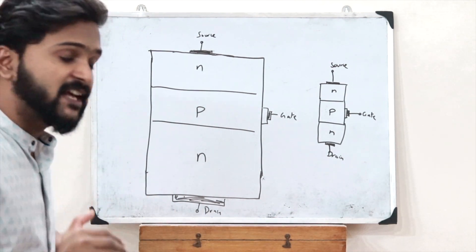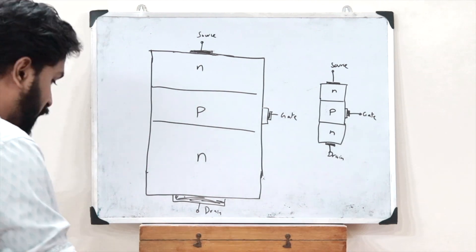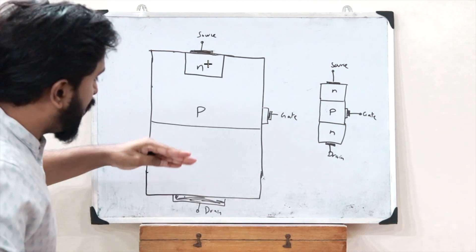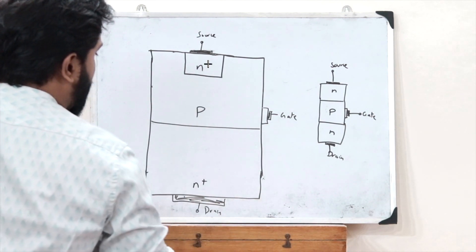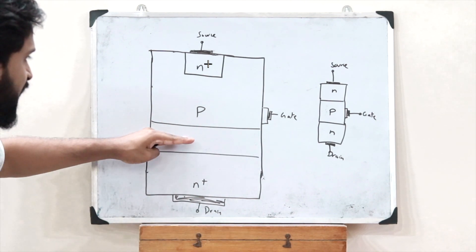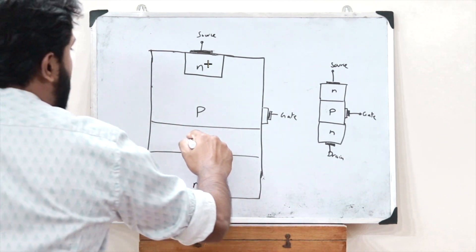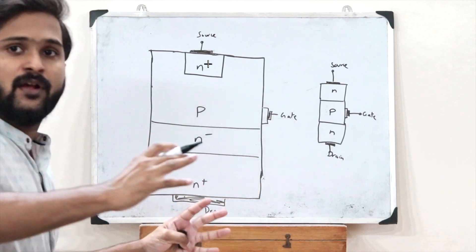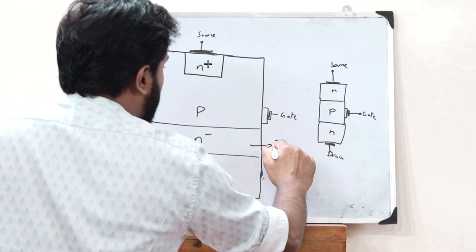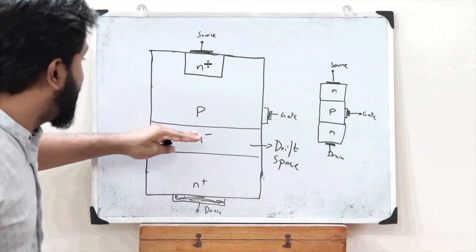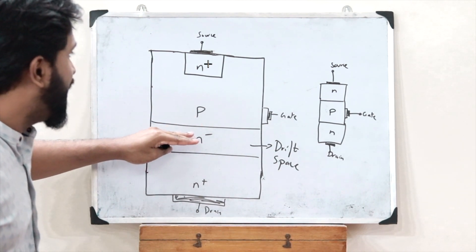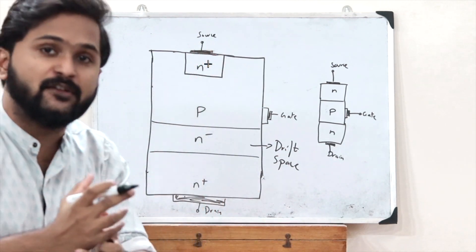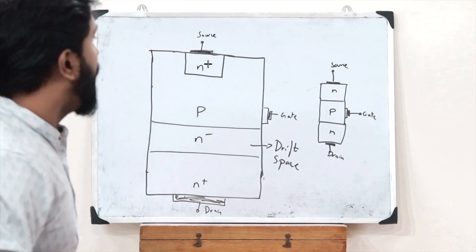The first change that we must bring forth is the doping. The drain must also be connected to an n-plus type of semiconductor material. This leaves a particular space where we will have an n-minus kind of semiconductor material, and this acts as the drift region of this particular power MOSFET. It is this drift region that is responsible for the high voltage handling capabilities and the very high switching frequency of this power MOSFET.